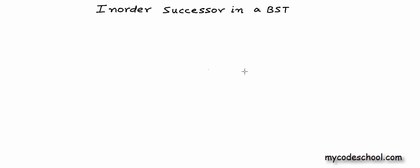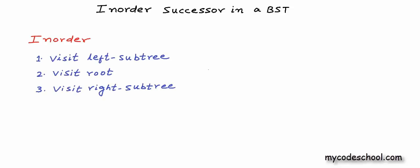As we know, in inorder traversal of a binary tree, we first visit the left subtree, then the root, and then the right subtree. Left and right subtrees are visited recursively in the same manner. So for each node, we first visit its left subtree, then the node itself, and then its right subtree. We have already discussed inorder traversal in detail in a previous lesson in this series.